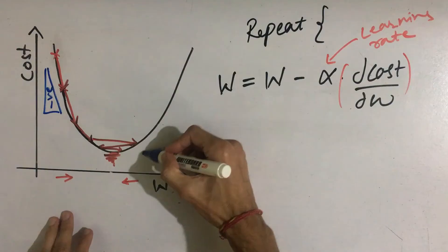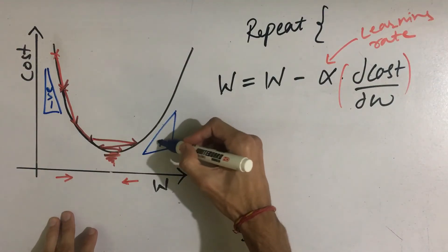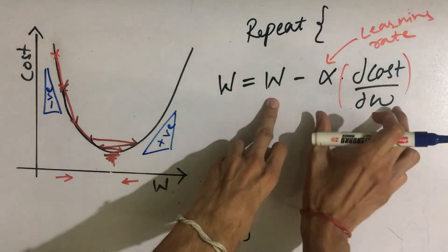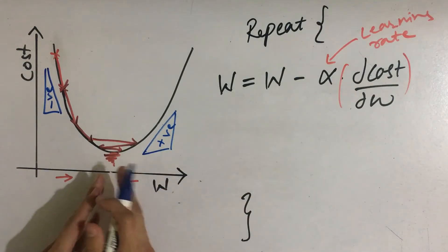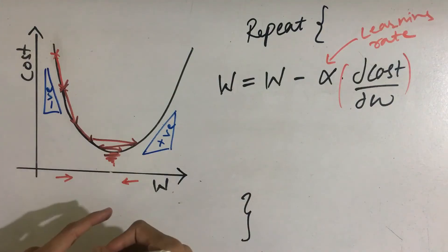And let's say if we are on this half, then the slope is going to be positive. So we are subtracting w with a small quantity, thus the w will decrease and we will move towards the minima. And eventually we will keep on oscillating at the region very close to our local minima.